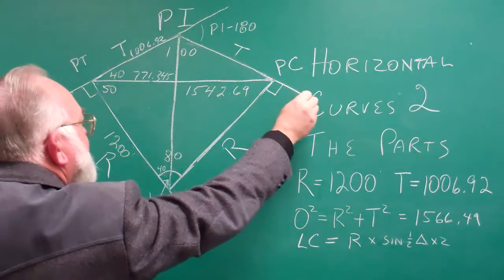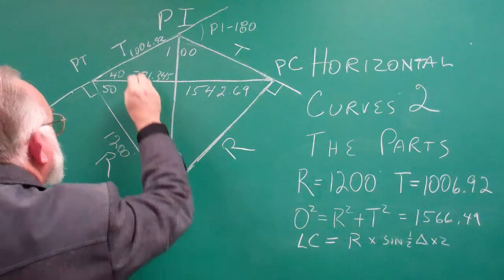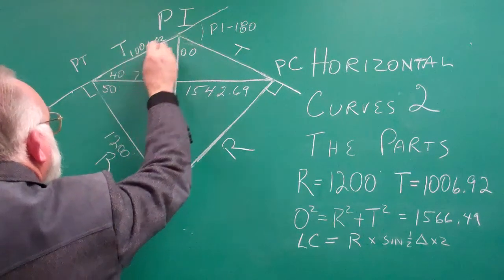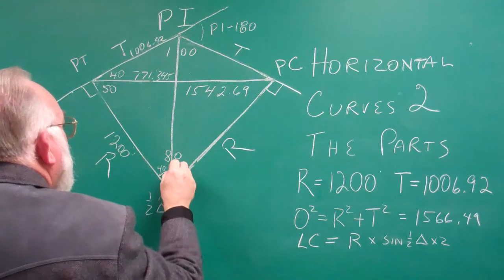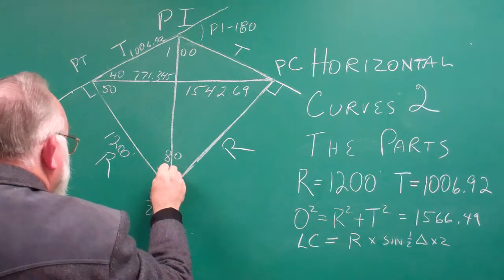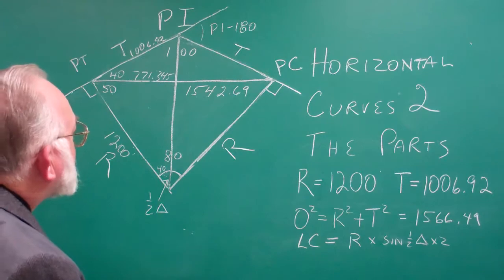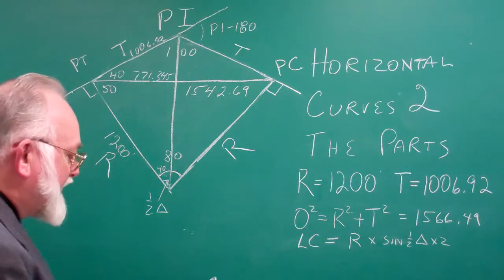This tangent line. It is the tangent, or it's equal to the angle for setting this point, half of the delta angle, which we already figured out was 40, and the distance is 1542.69. So now you've got that figure figured out.